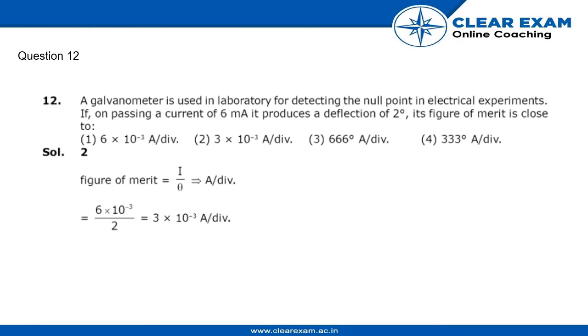Hello guys, we have a question here that says a galvanometer is used in laboratory for detecting the null point in electrical experiments. If on passing a current of 6 milliampere it produces a deflection of 2 degrees, its figure of merit is close to - we have to find its figure of merit. So we have a formula for figure of merit.